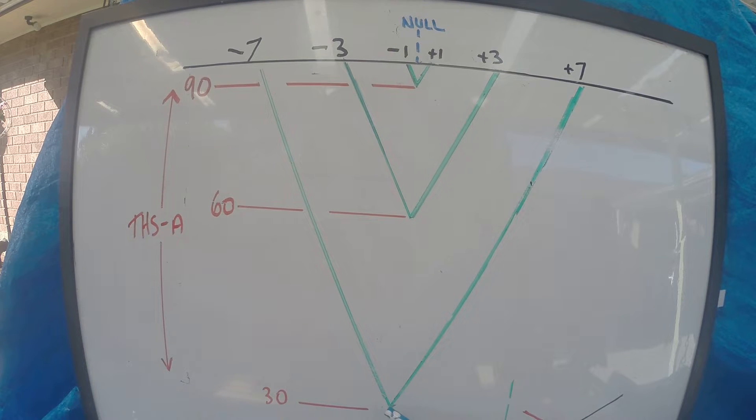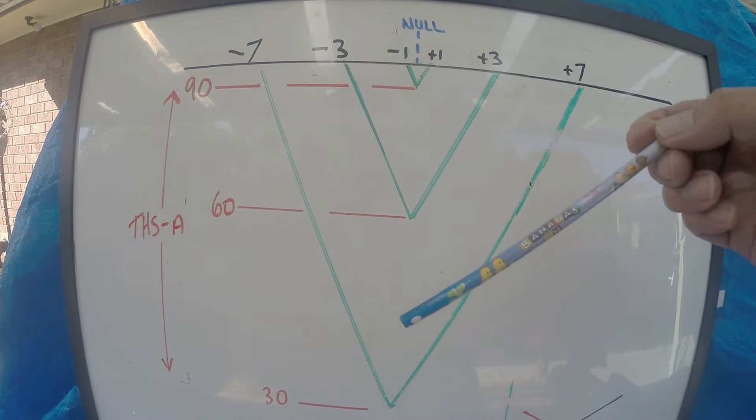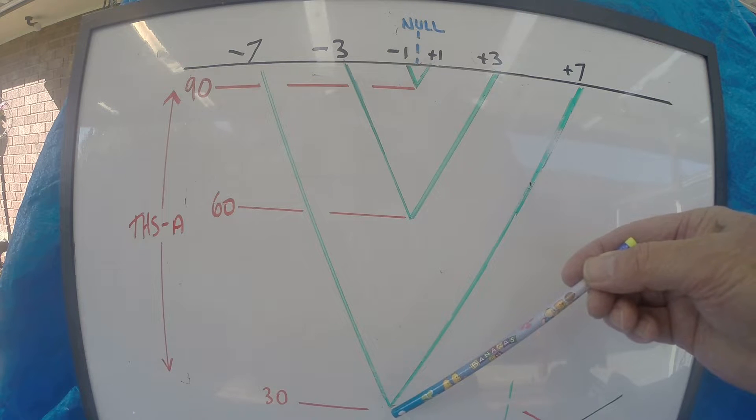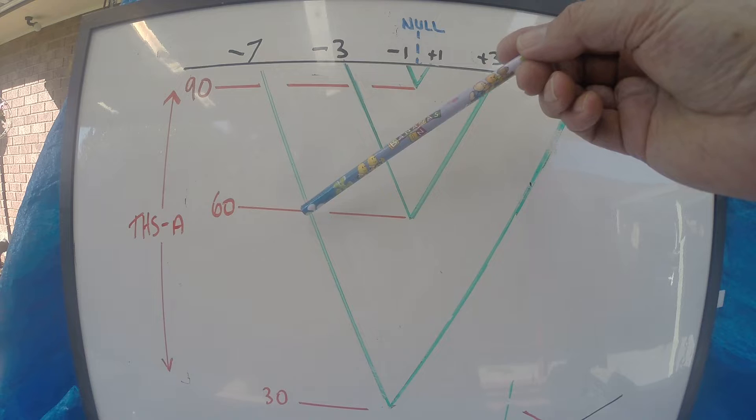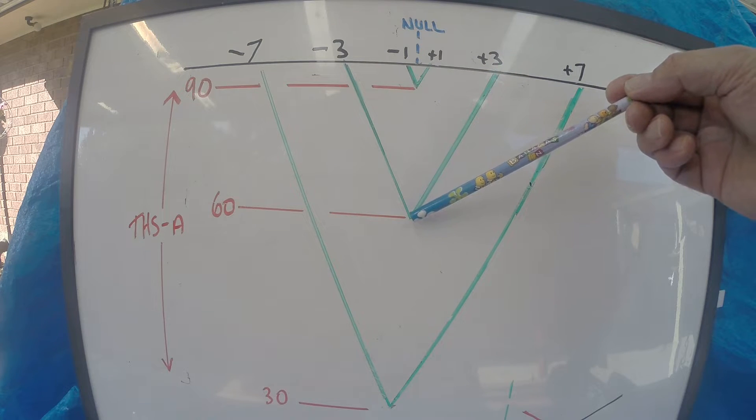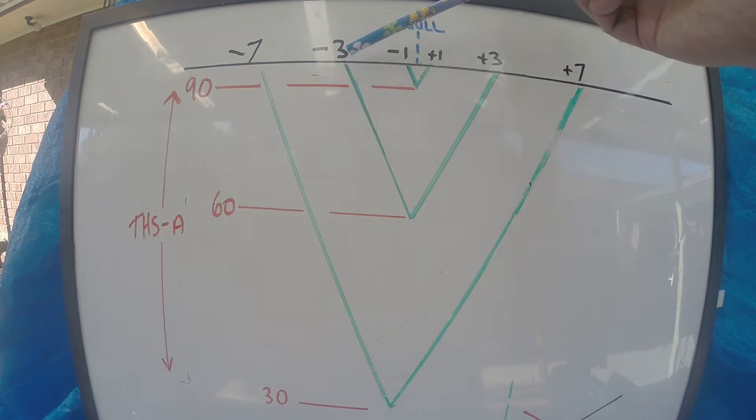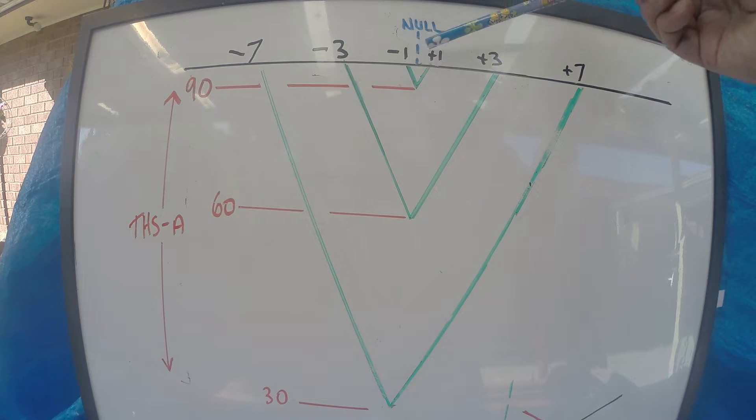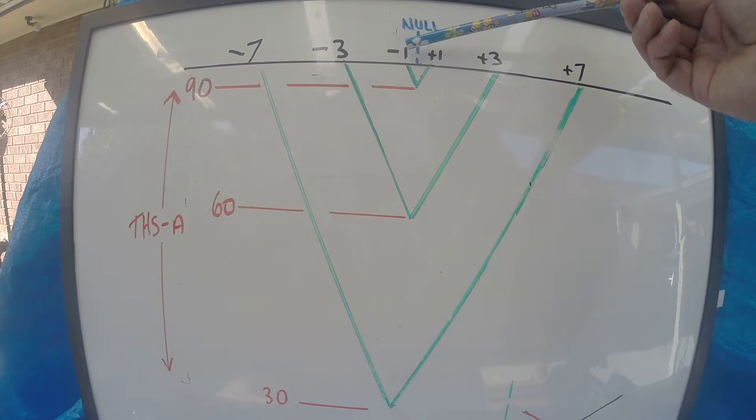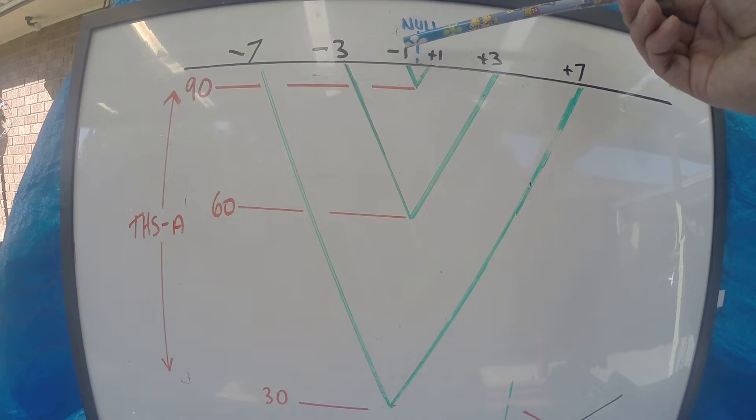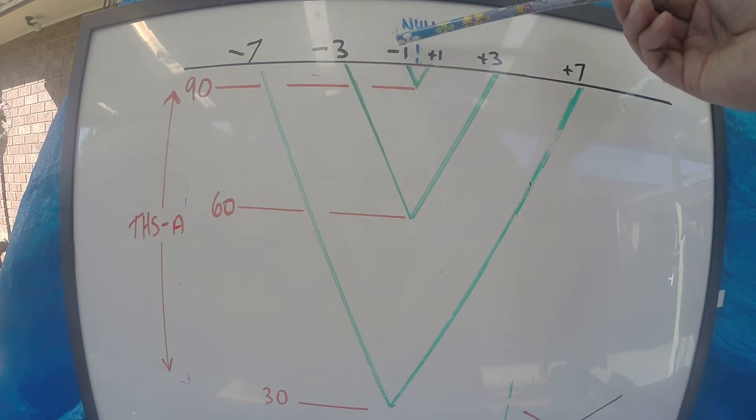Now, down here, you'll get Threshold A of 30. When you draw the line up, you'll see that you can get to about minus 7 or 7-under NULL at Threshold A of 30. At a Threshold A of about 60, you should be able to get Threshold B of about under 3, 3-under. And at about 90 of Threshold A, you'll be pushed to get a 1-under NULL from an under point of view.